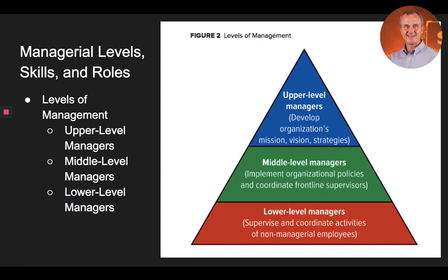Levels of management. Not all managers are expected to complete the same types of tasks. One major determinant of a manager's duty in the organization is the level of management at which the person functions. As seen in Figure 2 on your screen, organizations tend to have three levels of management: upper-level managers, middle-level managers, and lower-level or frontline managers, commonly called supervisors.